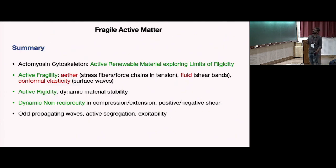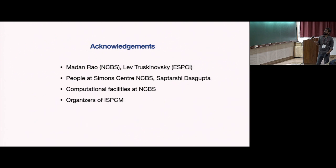This is the summary basically. This material is an active renewable material which is exploring the limits of its rigidity. It has these three fragile regimes, and it shows active rigidity, dynamic non-reciprocity. I'll thank my supervisors Madan and Lev, and Saptarshi, who is a PhD student at Simons, for simulating our theory and the facilities at NCBS and the organizers of ISTCM. Thank you so much.